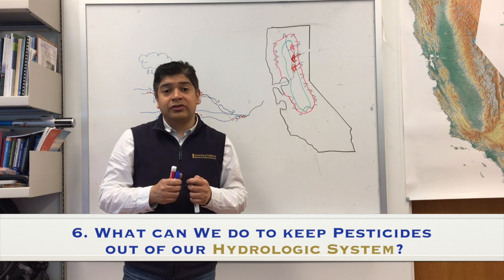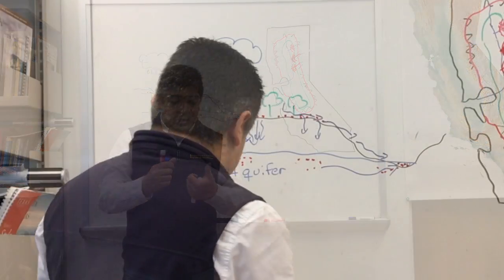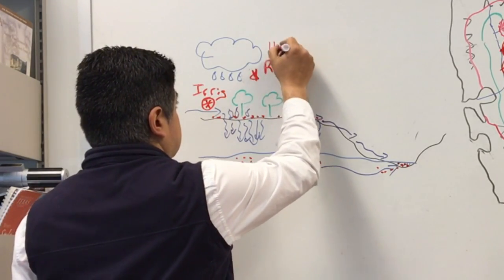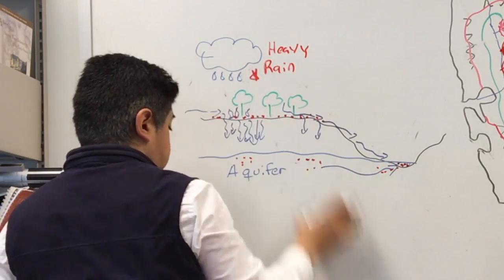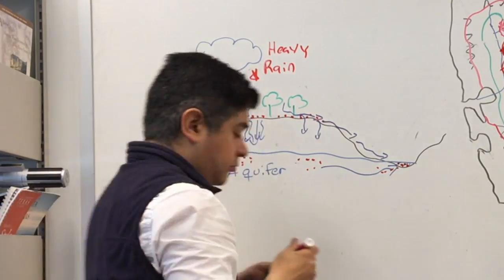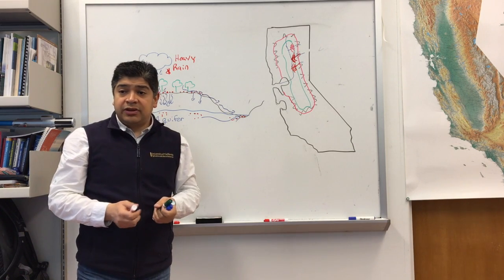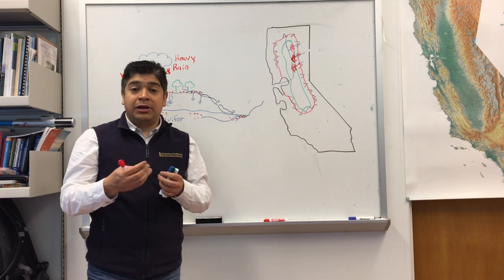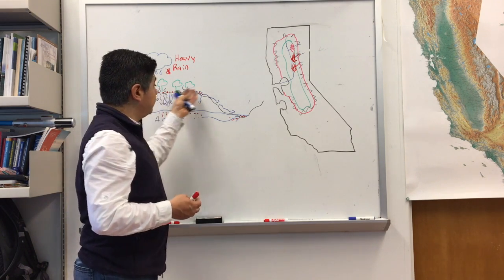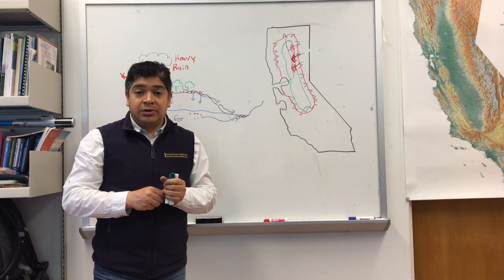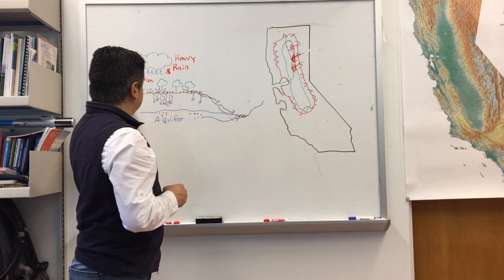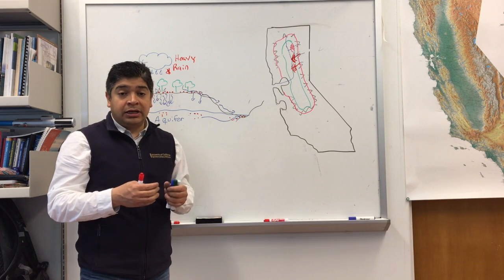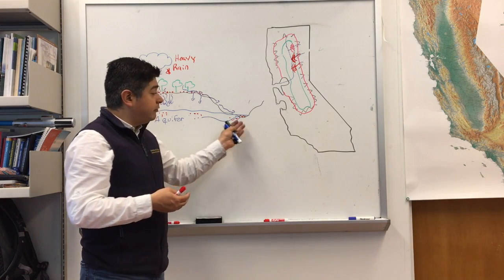What are the things we can do to keep pesticides out of water? Some of the main drivers are heavy rain or irrigation. In the case of heavy rain, take a look at the weather forecast. If you are seeing that there is rain coming, do not apply pesticides before heavy rain, because that is likely to end up moving the pesticides into the rivers or into the aquifers. Similarly, if you're going to be doing any irrigation practice, consider not applying any pesticides before any heavy irrigation, because it's very likely that the pesticides will be carried with the water to the aquifer or to the river.